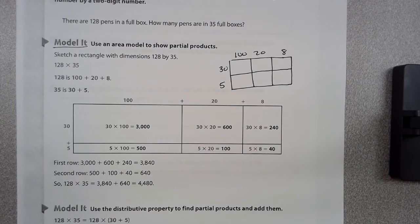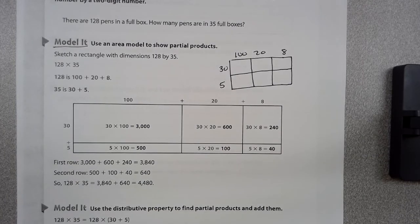What you do is you have to take 128, and you have to break it apart. Basically, you're doing your expanded form. You have 100, 2 tens, and 8, so that would be 100 plus 20 plus 8. 35, you have 3 tens and 5, so that would be 30 plus 5.